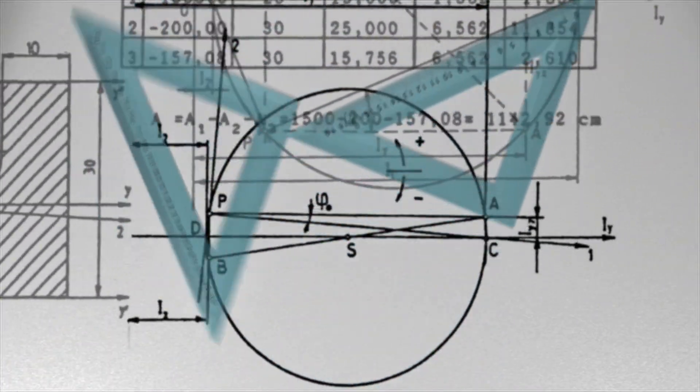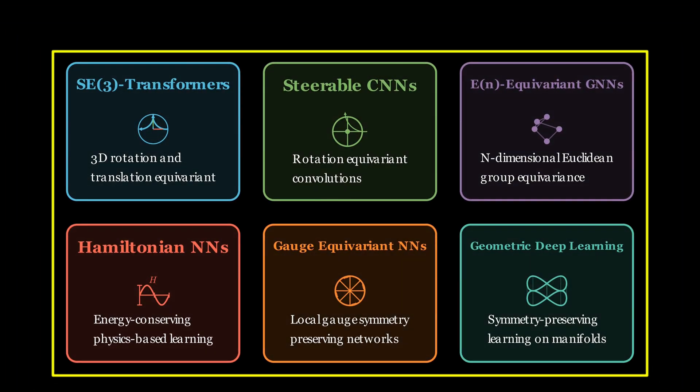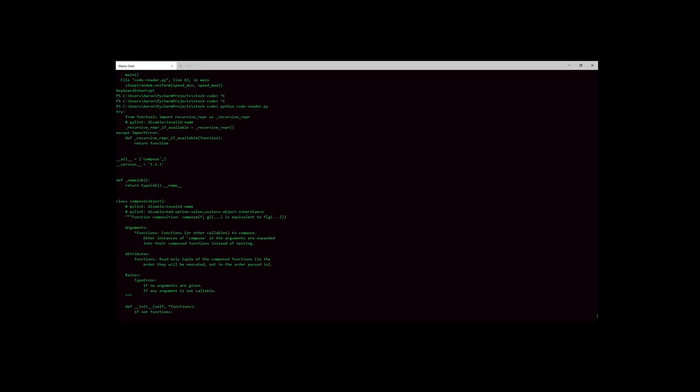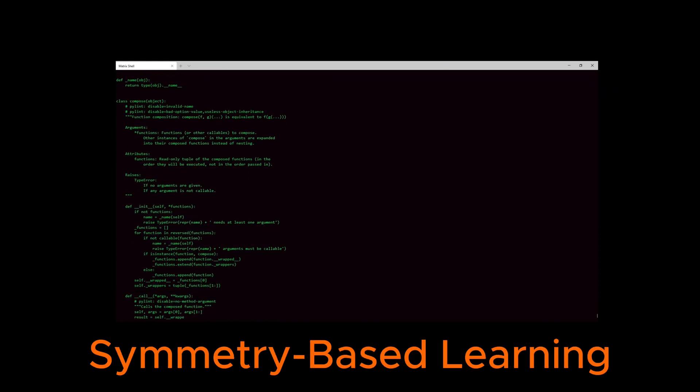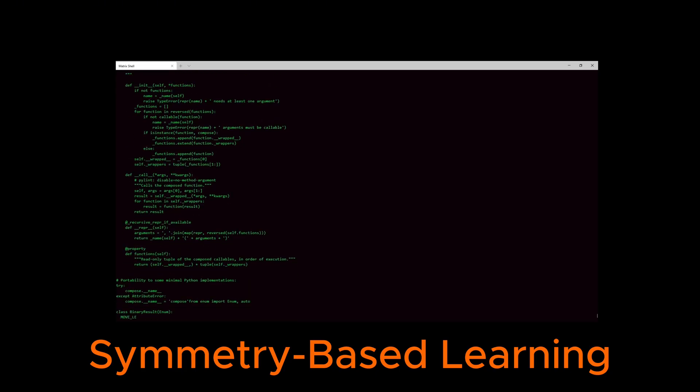If the universe itself uses symmetry as the most fundamental classification tool, maybe we should rethink how we design machine learning models. Maybe the future of machine learning lies not in similarity-based methods but in symmetry-based methods. So if you're someone who dreams of inventing the next breakthrough algorithm in machine learning, here is a powerful direction to explore: Bring symmetry into machine learning. That might be the key to building models that truly understand the universe the way physics does.